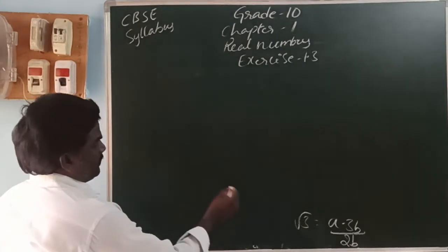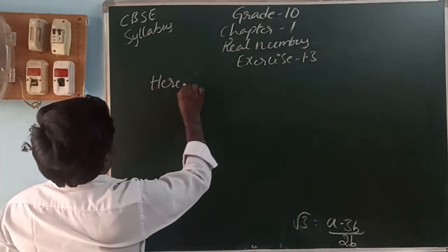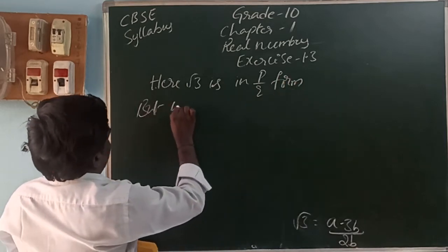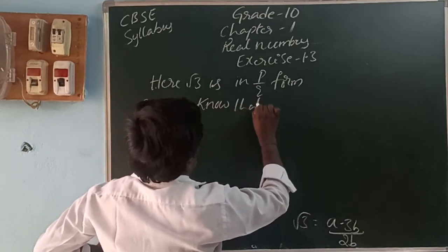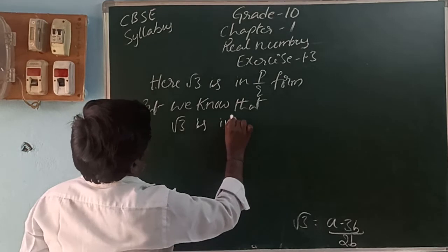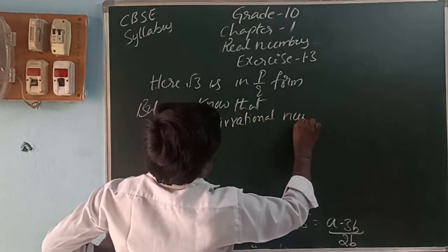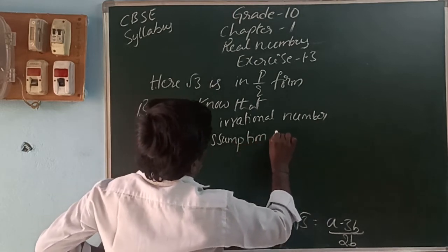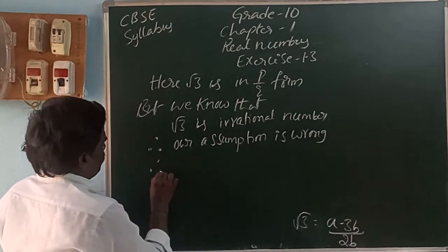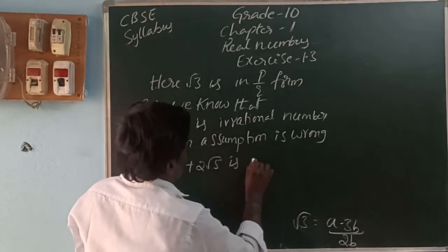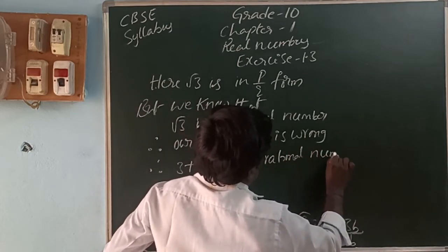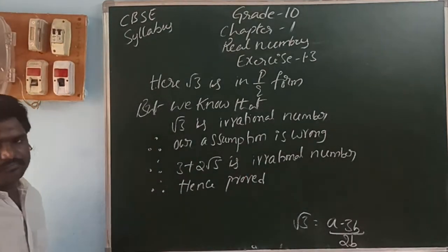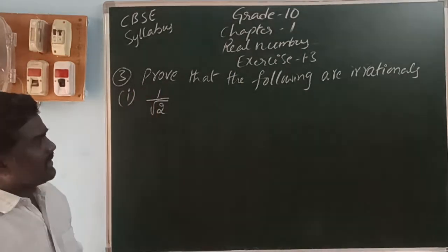But root 3 — here root 5 is in the p by q form. But we know that root 5 is an irrational number. Therefore our assumption is wrong. So therefore 3 plus 2 root 5 is an irrational number. Hence proved.